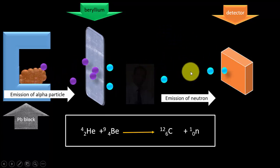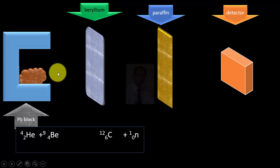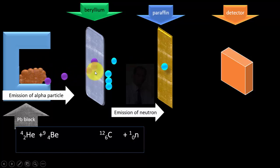Then the experimental setup was changed. Now paraffin wax which is a proton-rich material was placed in front of beryllium before the detector. When alpha particles started emitting out of polonium material onto beryllium metal, again the same happened: neutrons were released, emission of neutron took place.